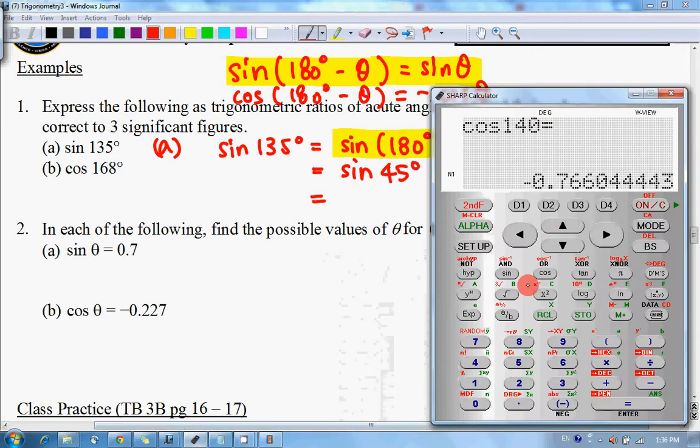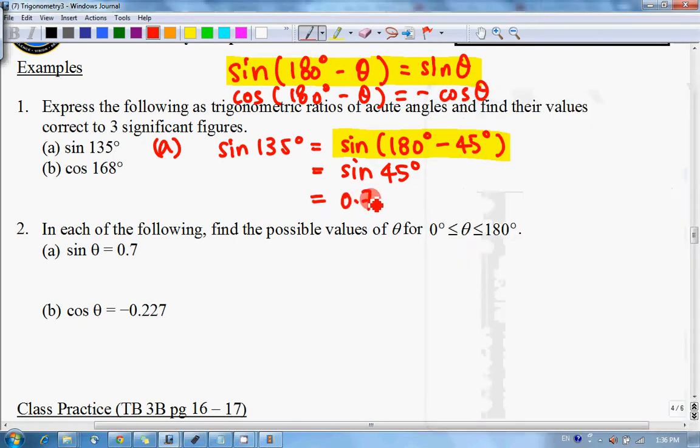I will get 0.707. So 0.707 to three significant figures. This is how we convert an obtuse angle into an acute angle.